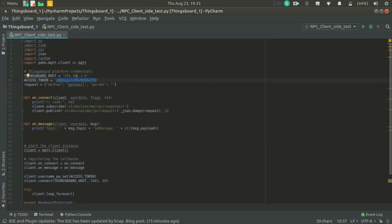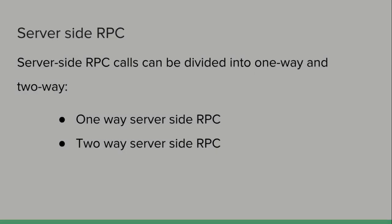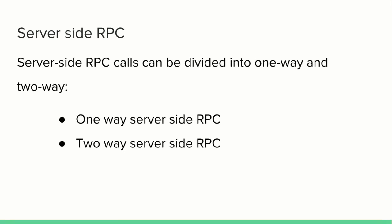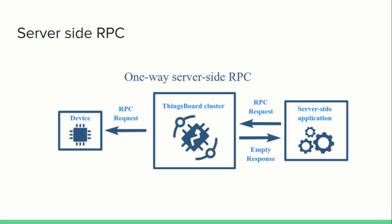Next we will have a look at server-side RPC. Server-side RPC can be divided into two types: one-way and two-way server-side RPC. In server-side RPC, the ThingsBoard IoT platform is the originator. This figure illustrates one-way server-side RPC, where ThingsBoard sends an RPC request to the device and no RPC response from the device is required.